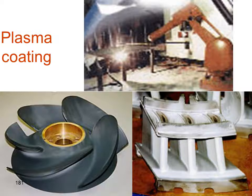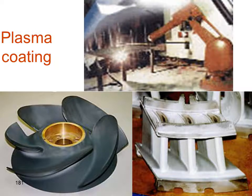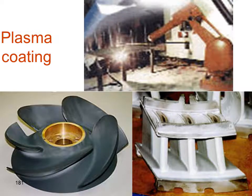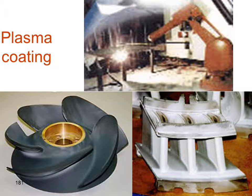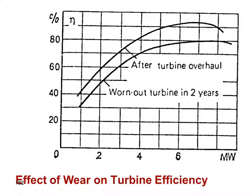Rehabilitation of damaged turbines can be done by coating the runner with plasma coating or ceramic coating to restore smooth surfaces and reduce flow losses. Here a robot applies a plasma coat, and a curve shows turbine efficiency and power — for example, a maximum of 8 megawatts for a new runner.